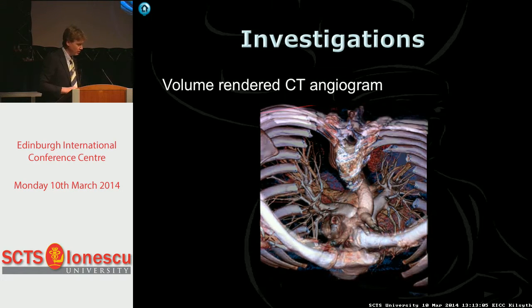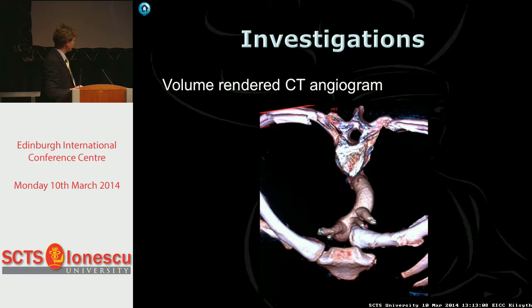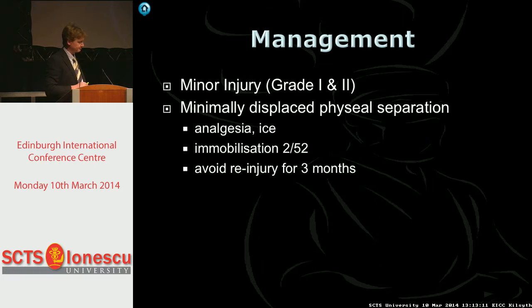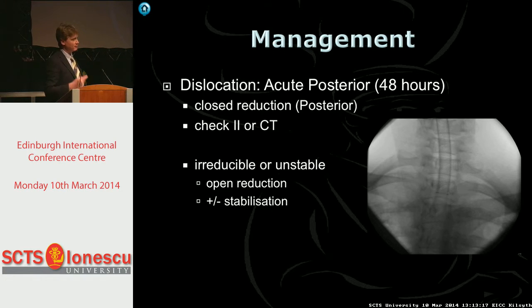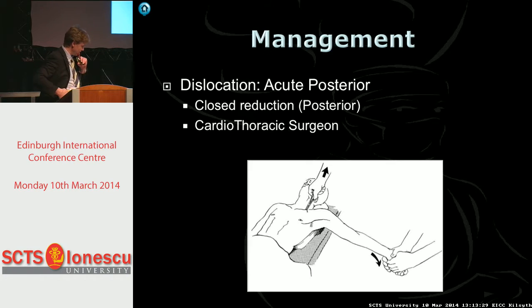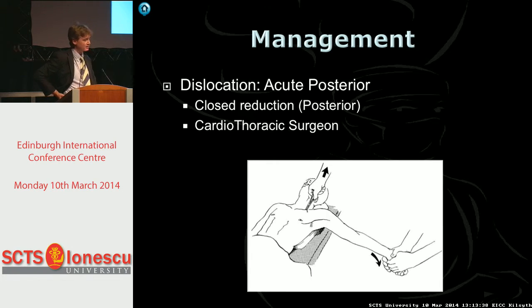On volume rendering you can subtract everything and see clearly how the clavicle has been pushed out the back - in this case pushing onto the top of the aorta. Management: undisplaced ones are non-operative and most get better. If posteriorly dislocated, try to reduce within 48 hours - attempt closed reduction first. If irreducible or unstable, you need to stabilise it. The classic closed reduction technique: sandbag between shoulder blades, traction on the clavicle, pulling as hard as you can - with a cardiothoracic surgeon standing next to you. In 21 years of training and practice, I've only had two or three opportunities to see it and one to do it - it wasn't as satisfying as the textbooks suggest.